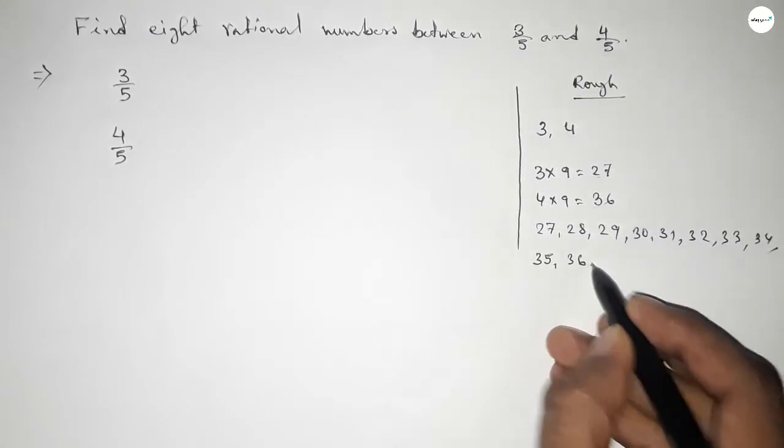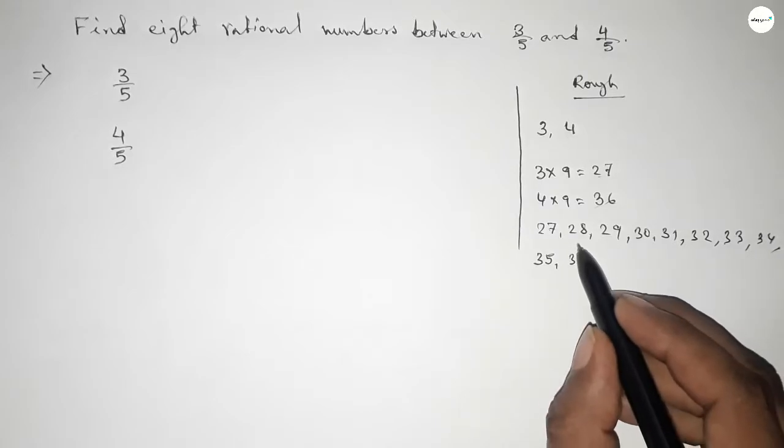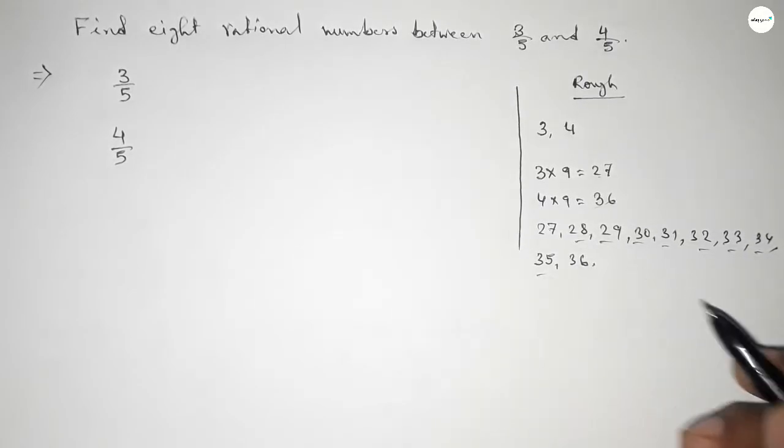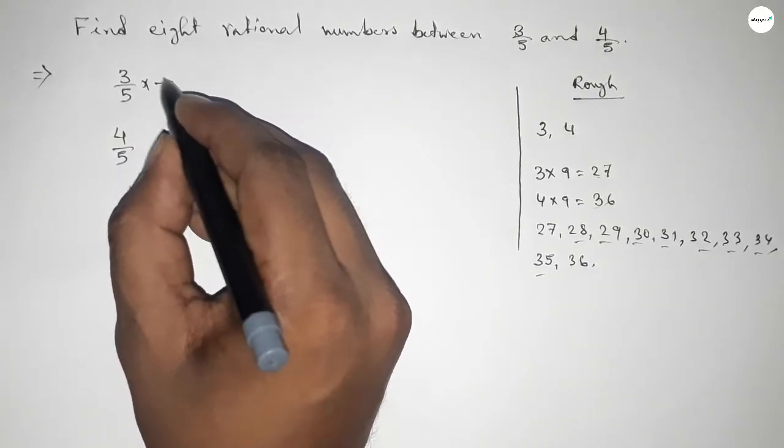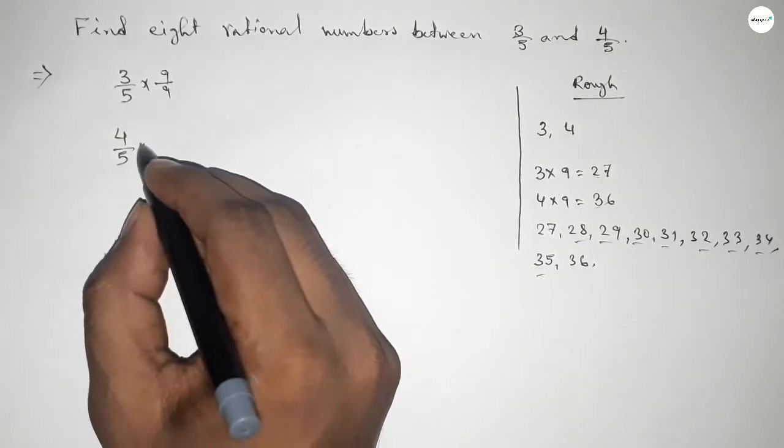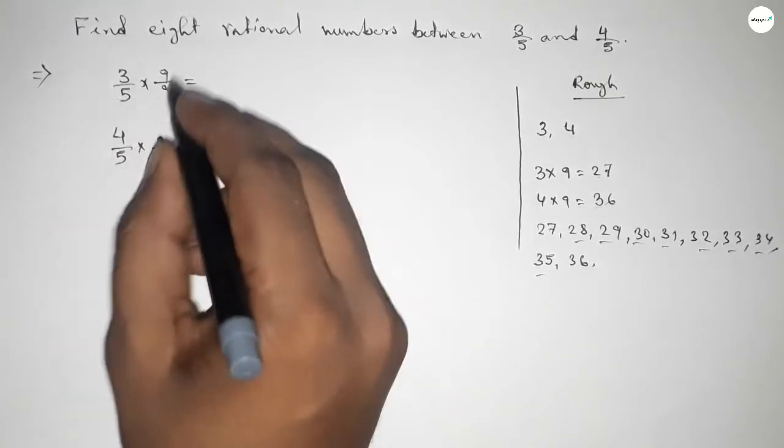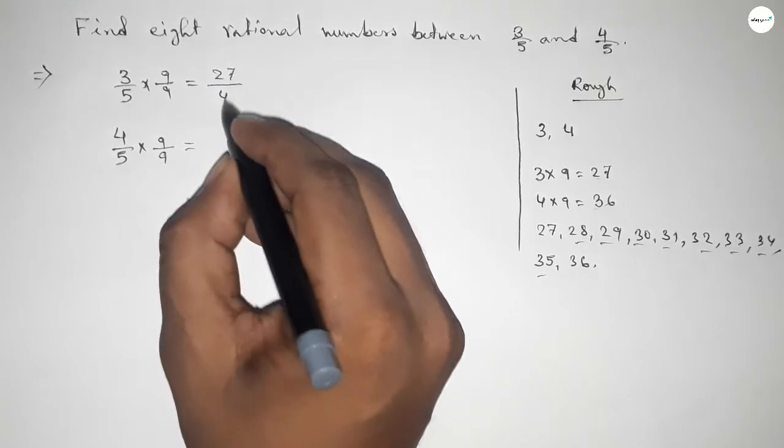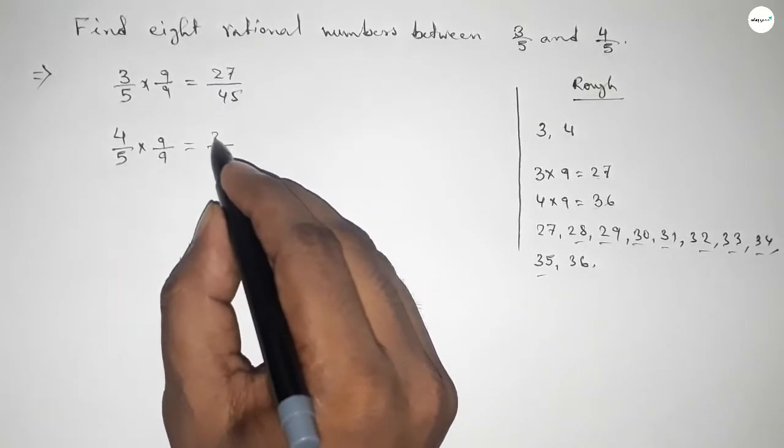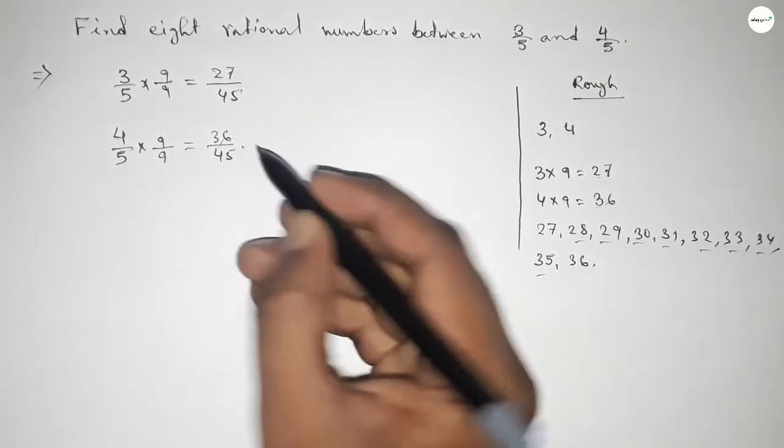And by these natural numbers we can form eight rational numbers. So we should multiply both numbers, up and down, by 9. By this way, this is 27 over 45 and this is 36 over 45.